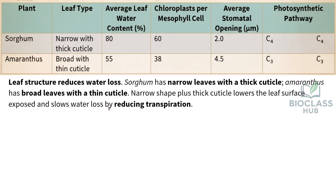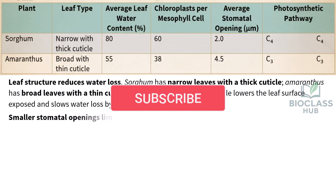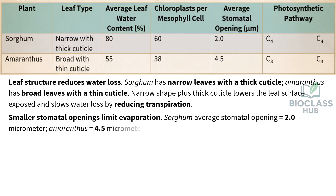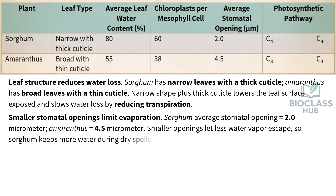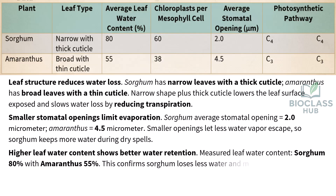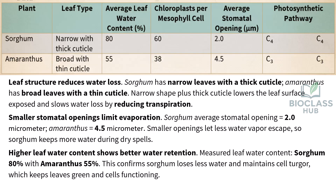Smaller stomatal openings limit evaporation: sorghum's average stomatal opening is 2 micrometers versus amaranthus at 4.5 micrometers. Smaller openings let less water vapor escape, so sorghum keeps more water during dry spells. Higher leaf water content shows better water retention — measured leaf water content: sorghum 80% versus amaranthus 55%. This confirms sorghum loses less water and maintains cell turgor, which keeps leaves green and cells functioning.